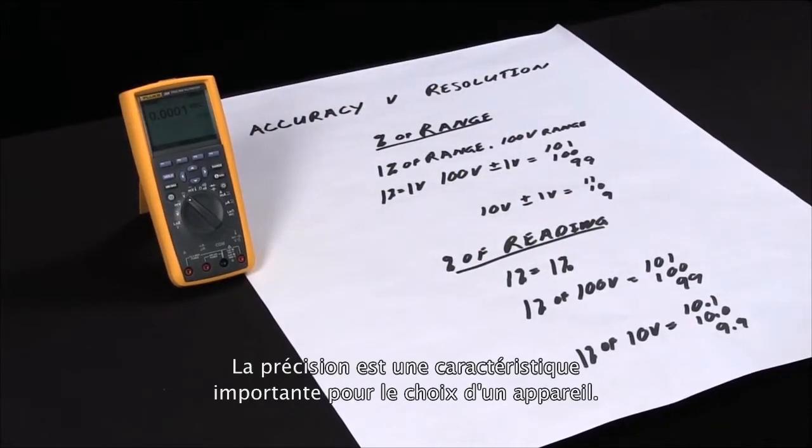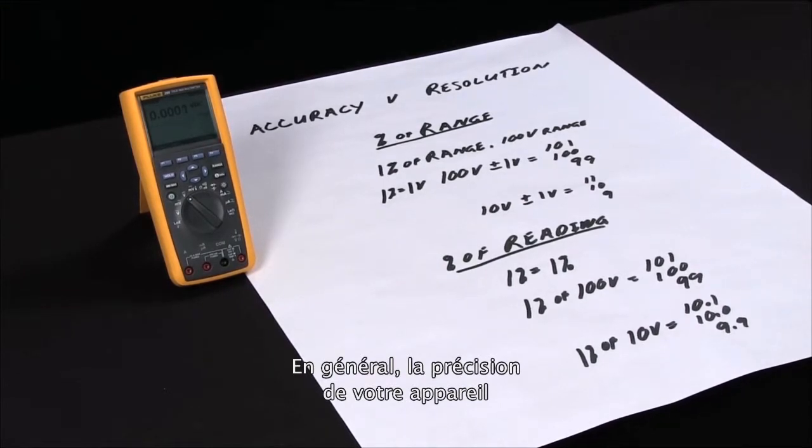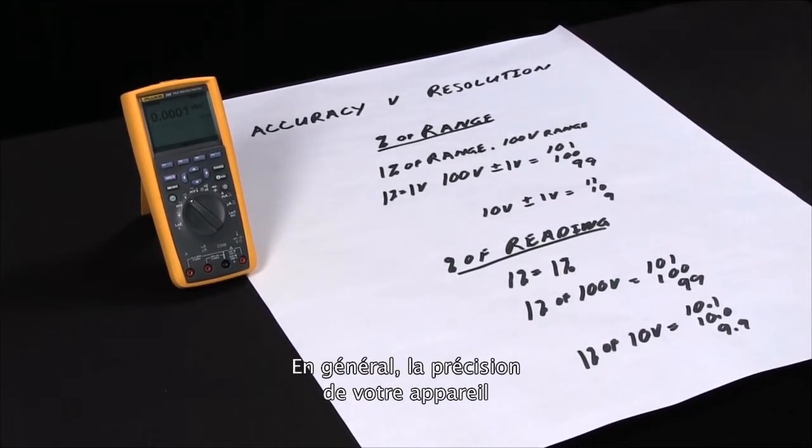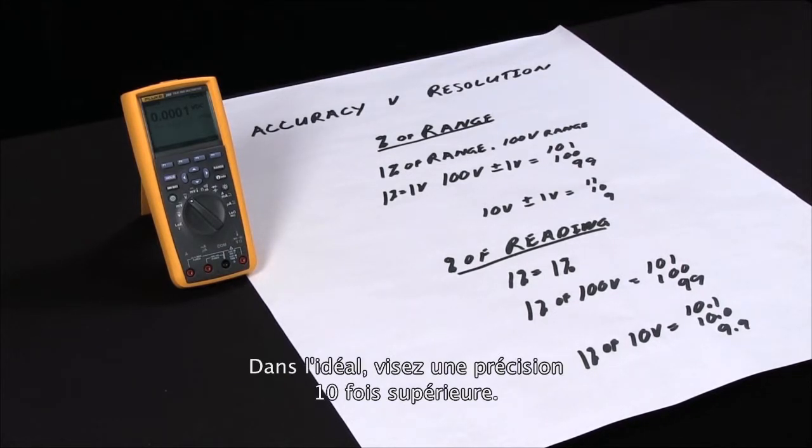Accuracy is an important specification when selecting an instrument because in many cases you want the accuracy of the meter you're using to be at least four times the accuracy of the measurement you're taking. A lot of times ten times is actually the goal.